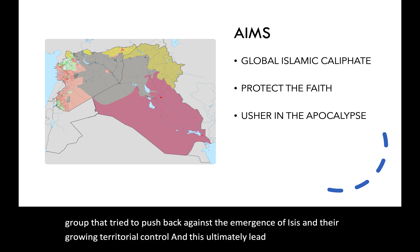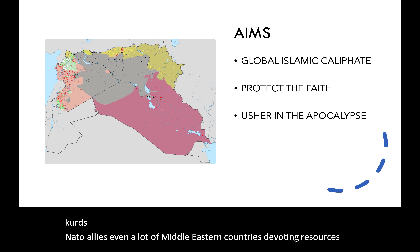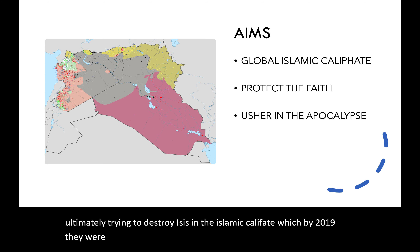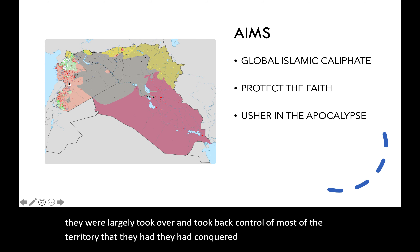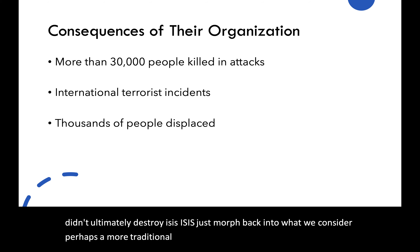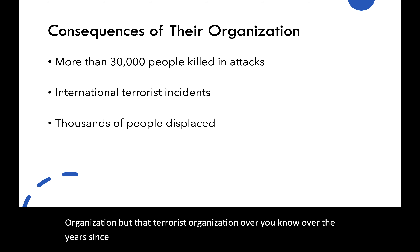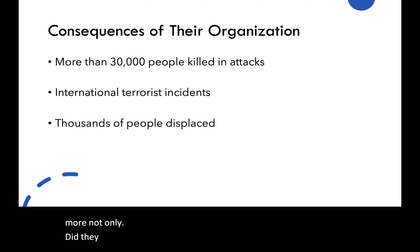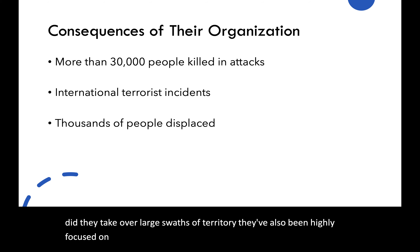This led to groups like the Kurds, NATO allies, and many Middle Eastern countries devoting resources to ultimately destroy ISIS and the Islamic Caliphate. By 2019, they had largely taken back control of most of the territory ISIS had conquered by 2015. But that didn't ultimately destroy ISIS — it just morphed back into what we consider a more traditional terrorist organization. Over the years since their founding in 1999, ISIS has been responsible for killing more than 30,000 people, with some experts believing the number is even higher.